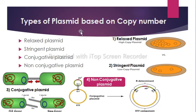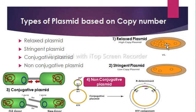Then we have types of plasmid based on copy number: relaxed plasmid, stringent plasmid, conjugative plasmid, and non-conjugative plasmid. Relaxed plasmid replicates within a cell independently of chromosomal DNA replication, and thus has a high copy number. Stringent plasmid replicates only along with the main bacterial chromosomes and has a low copy number.